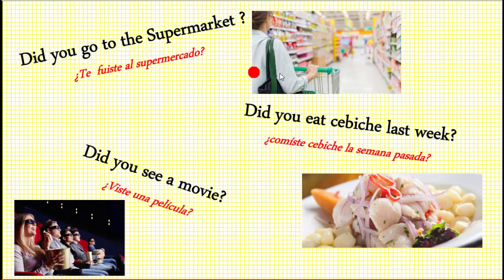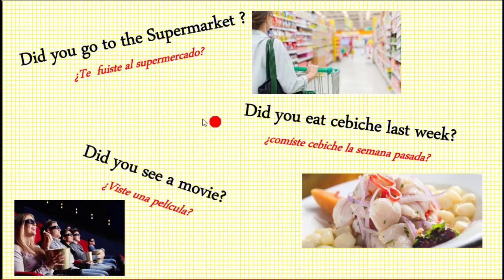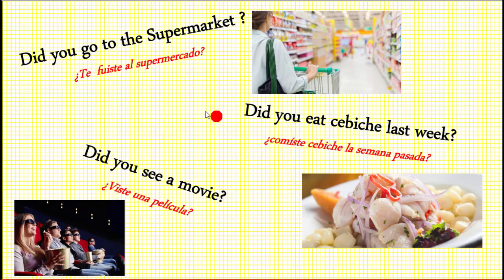For example: Did you go to the supermarket? I don't know if you went with your parents. Did you eat ceviche last week? Delicious! And: Did you see a movie? Probably you have the answer. Lo más importante es que estamos hablando en el pasado, y así empezamos haciendo preguntas en el pasado — the activities that you did.